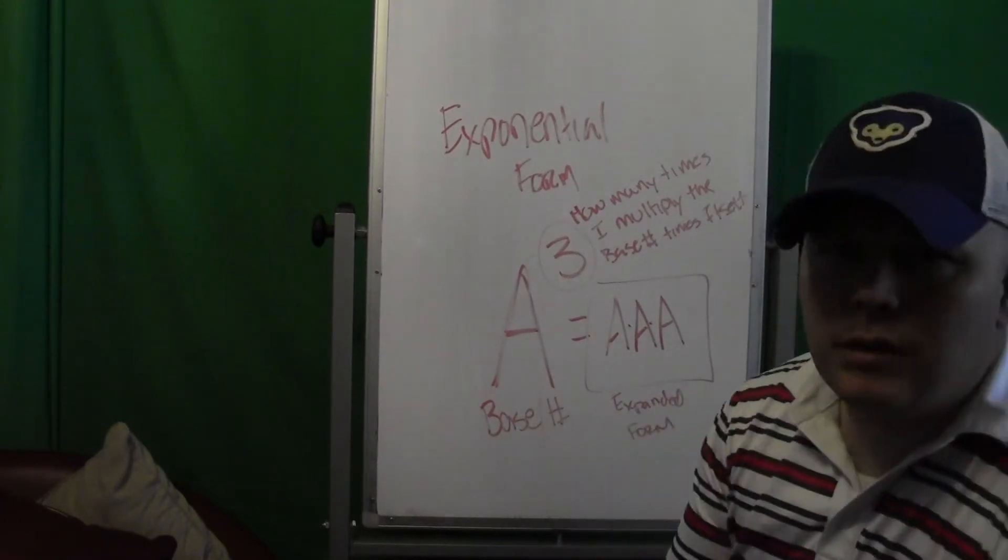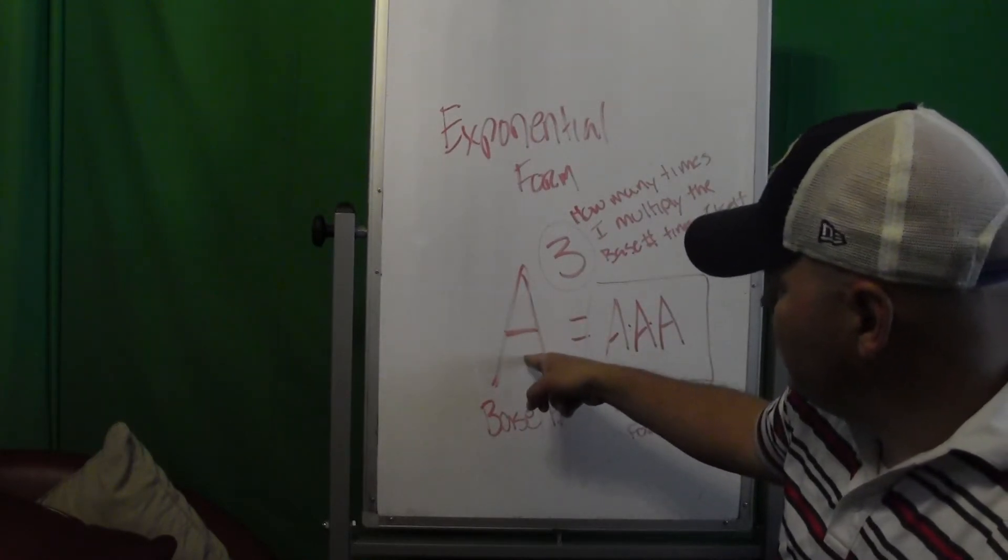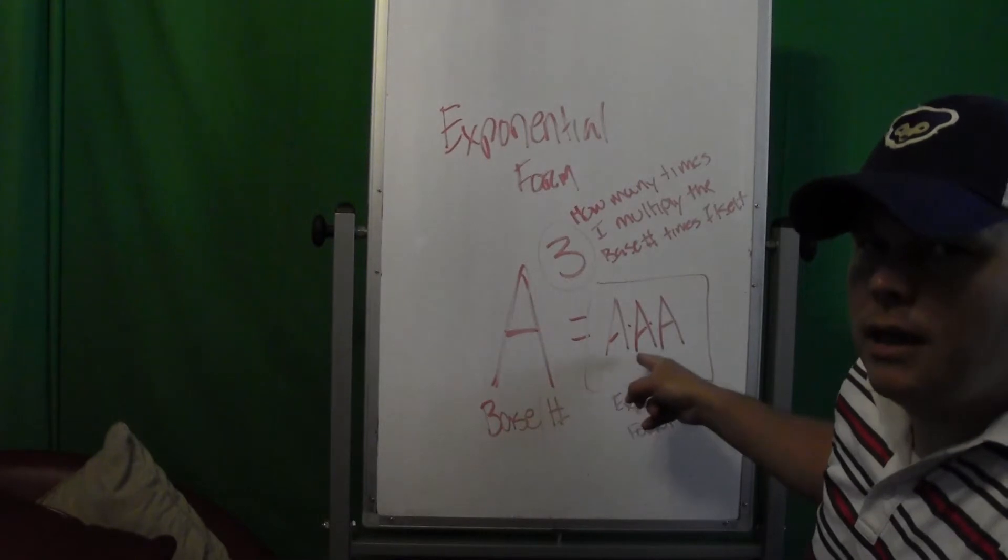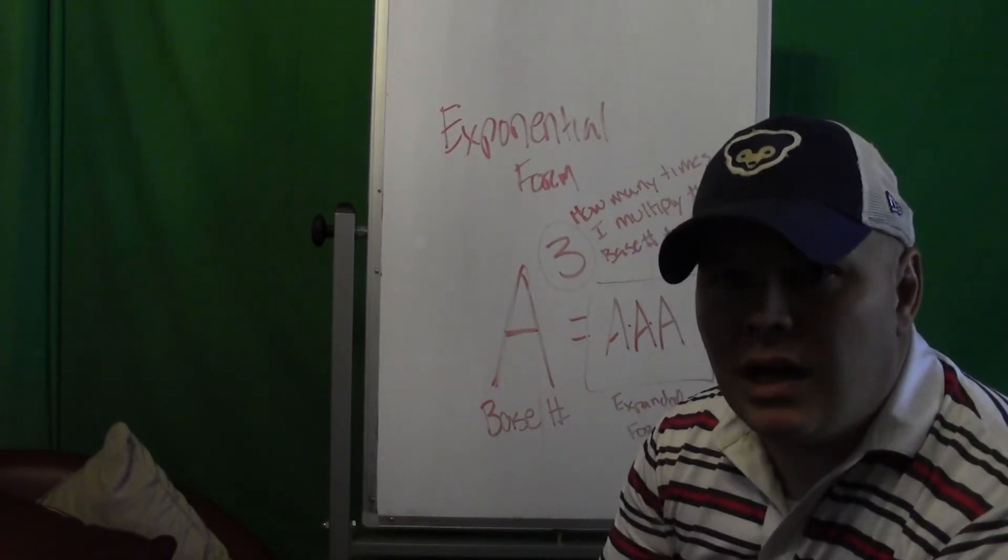So I took a to the third, which says I'm multiplying my base number times itself 3 times. It looks like this in expanded form: a times a times a. That's the gist of what we got going on here.